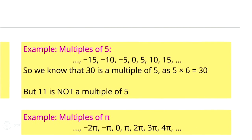In the next exercise you must find the multiples of 5. You can write the sequence of multiples of 5: minus infinity, minus 10, minus 5, 0, 5, 10, 15, and plus infinity. 30 is a multiple of 5 because 5 multiplied by 6 equals 30. But 11 is not a multiple of 5.